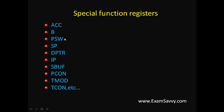PSW — Program Status Word — is an 8-bit register. It is both bitwise and bytewise accessible. It contains register mode selection bits like RS0 and RS1, which are used for selection of which bank to use — bank selection and mode selection.